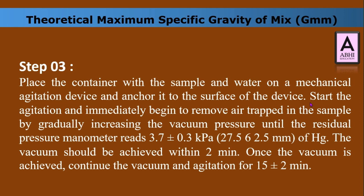Next, we vacuum all void air from the sample. Place the container with the sample and water on the mechanical agitation device and anchor it. Start agitation and immediately begin removing trapped air by gradually increasing vacuum pressure until the residual pressure manometer reads about 3.7 plus or minus 0.3 kilopascal. The vacuum should be achieved within two minutes; once achieved, control the vacuum and continue agitation for 15 plus or minus two minutes.